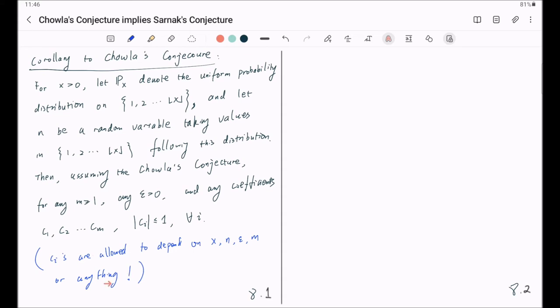You will see why I emphasize this later in the proof. So, assuming Chowla's conjecture, and for any such-and-such, we have the probability